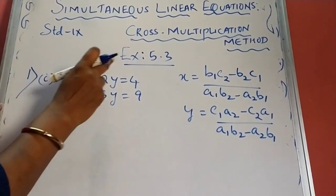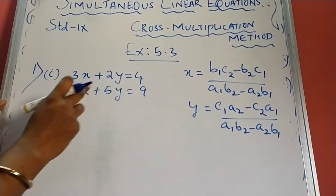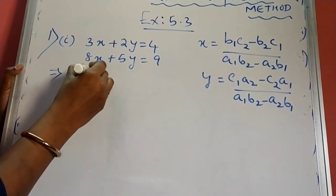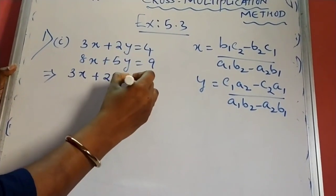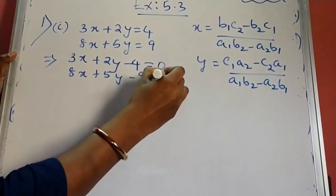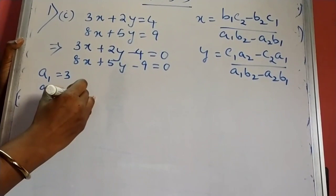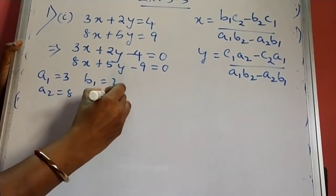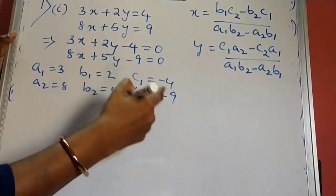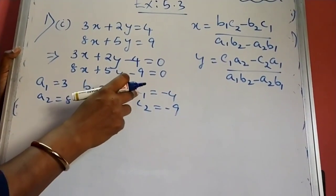This is question number 1, first bit from our textbook exercise 5.3: 3X plus 2Y is equal to 4, and 8X plus 5Y is equal to 9. We rearrange these equations by bringing the constant to the left side: 3X plus 2Y minus 4 is equal to 0, and 8X plus 5Y minus 9 is equal to 0. Here the value of A1 is 3, A2 is 8, B1 is 2, B2 is 5, C1 is minus 4, and C2 is minus 9.